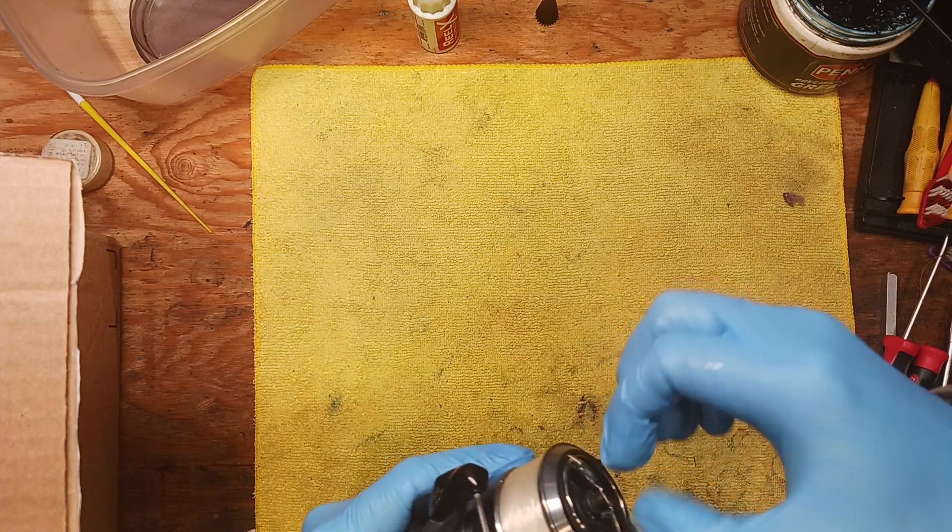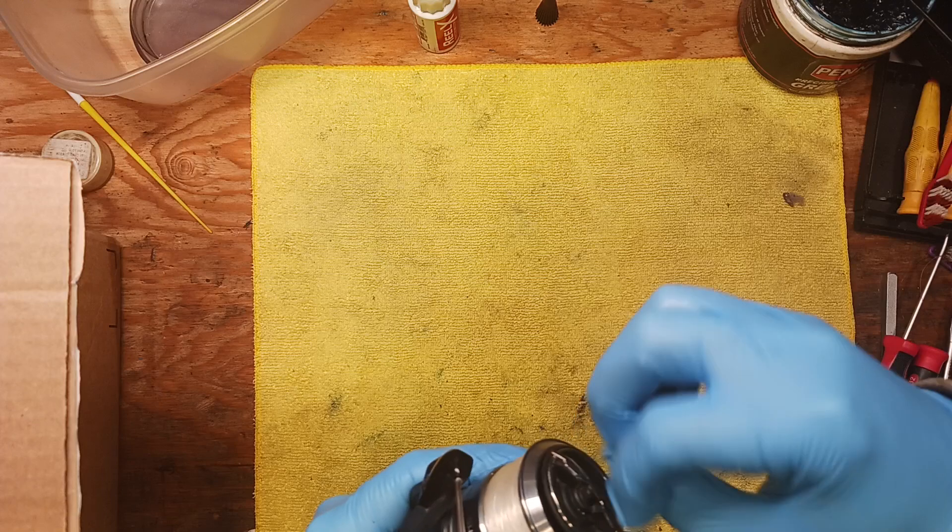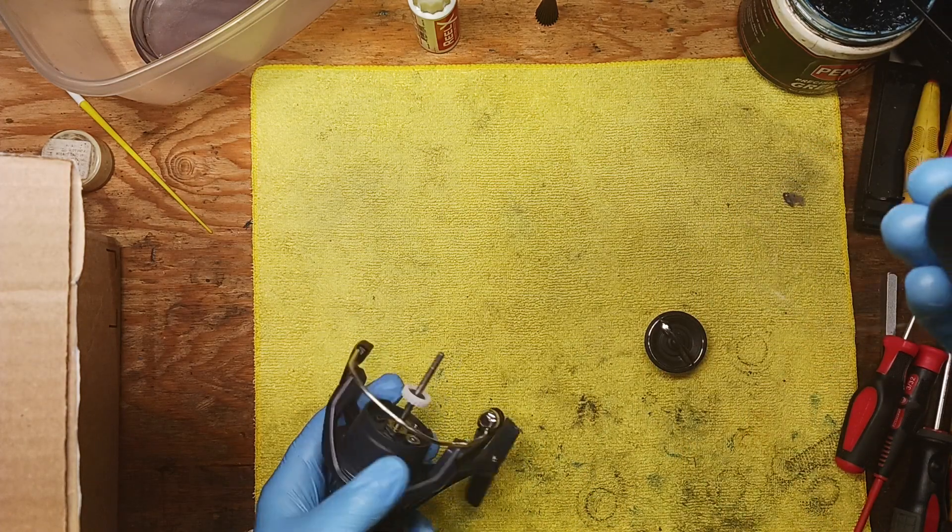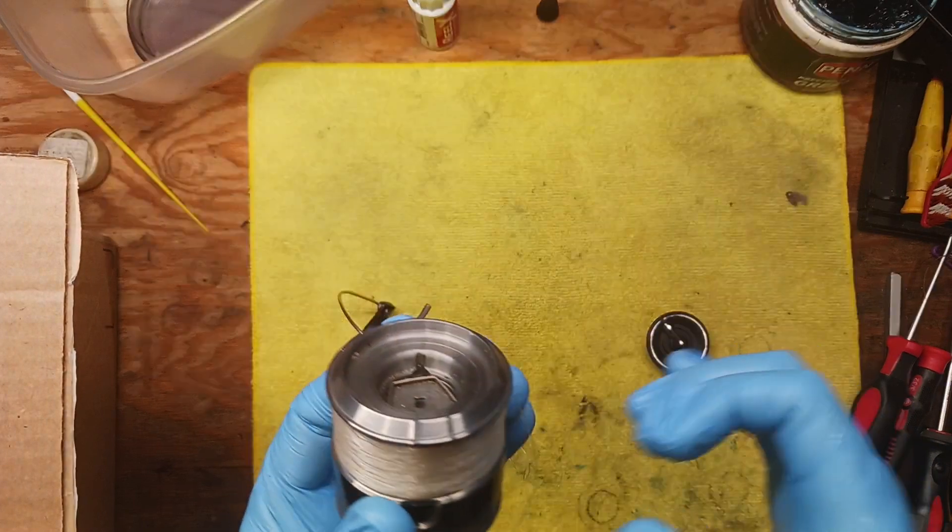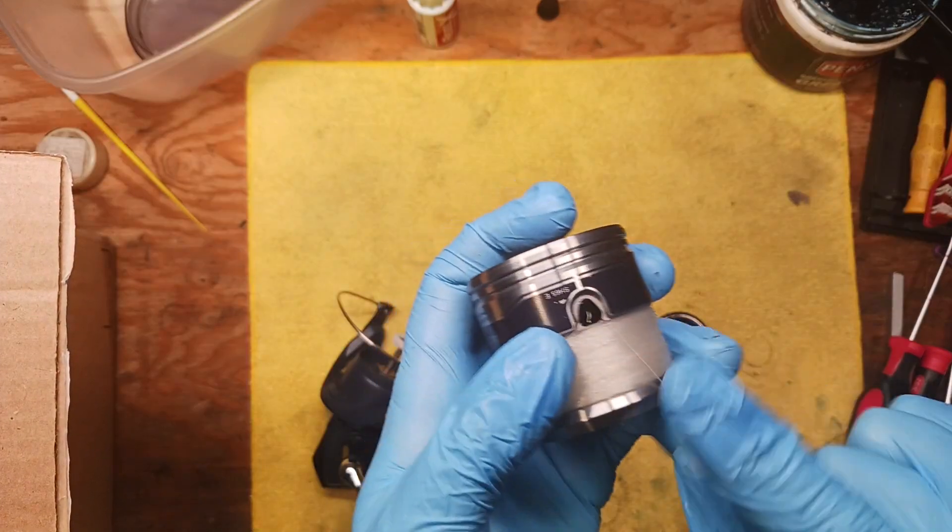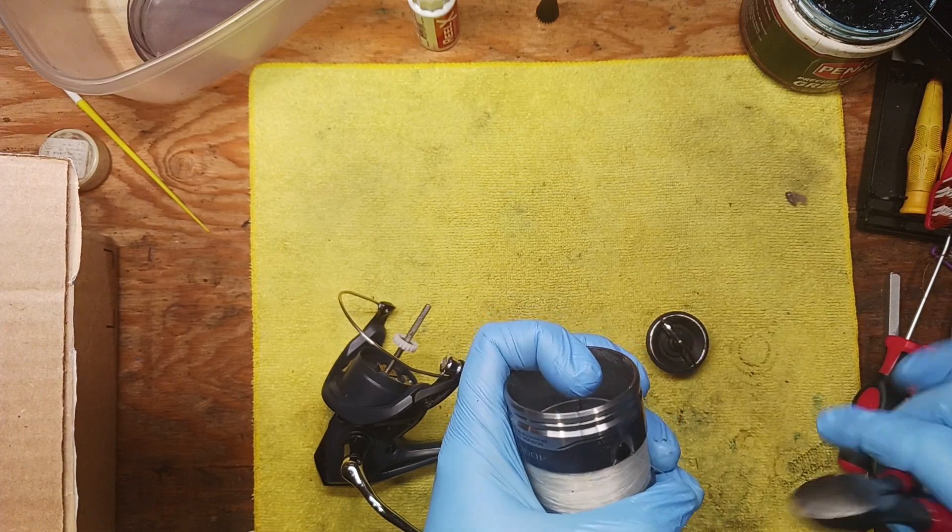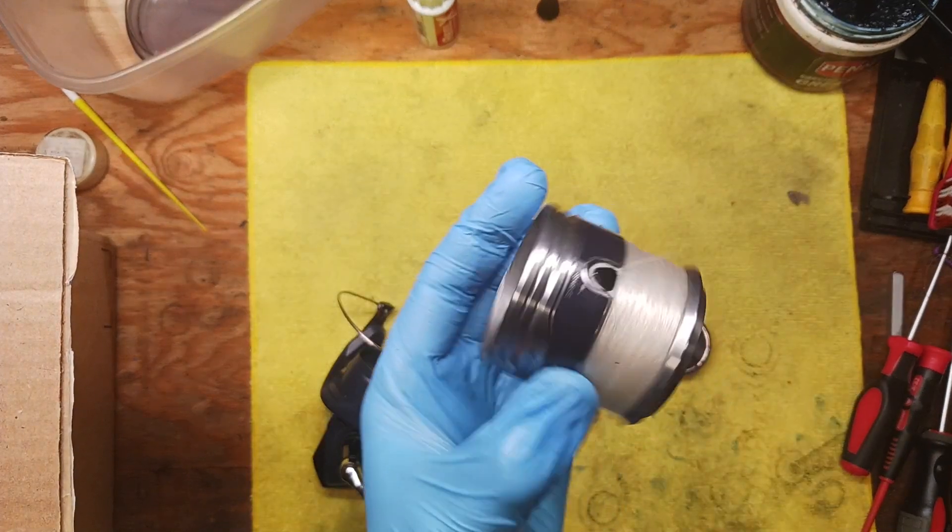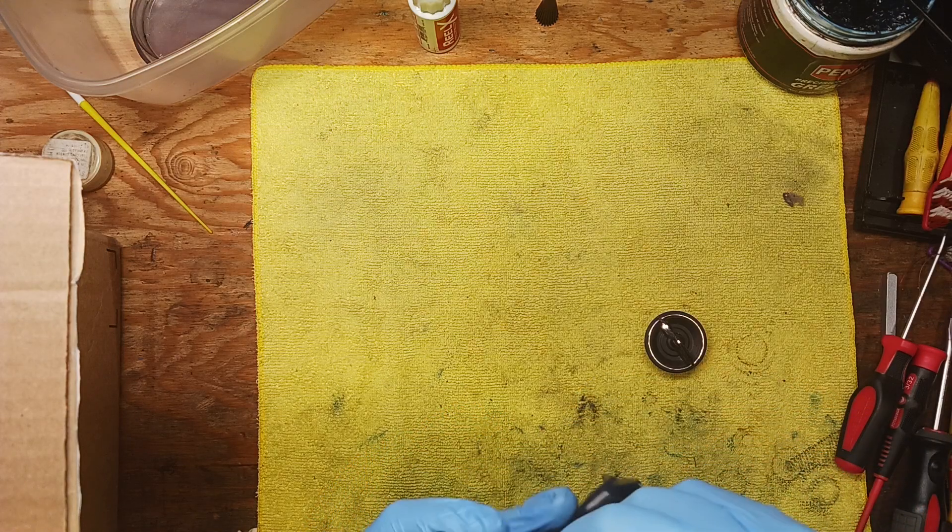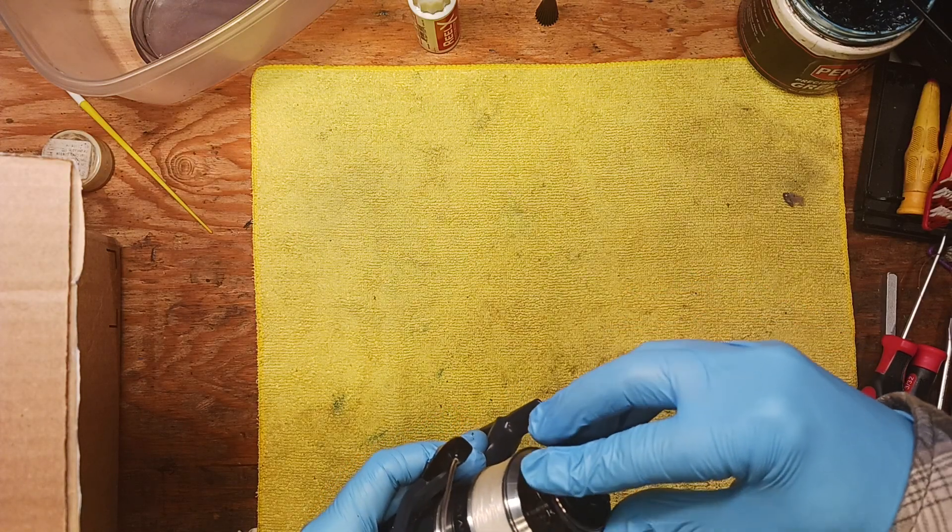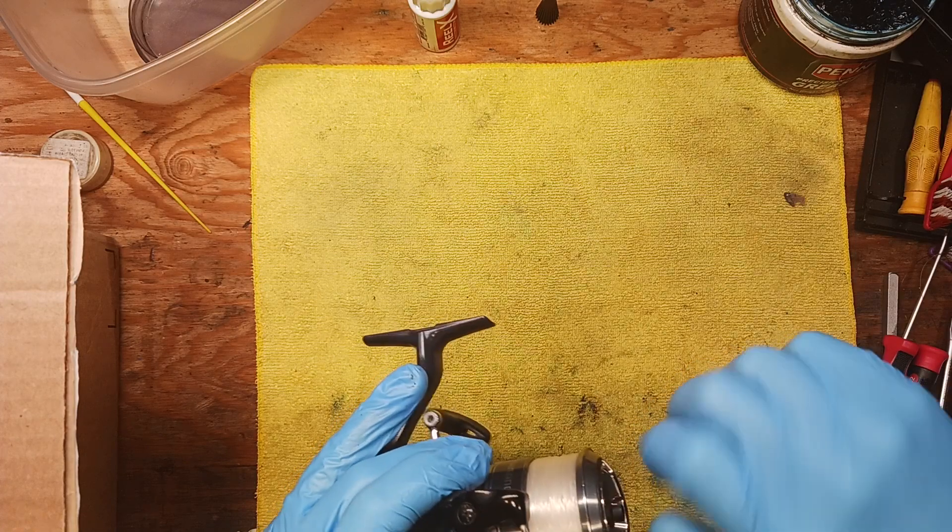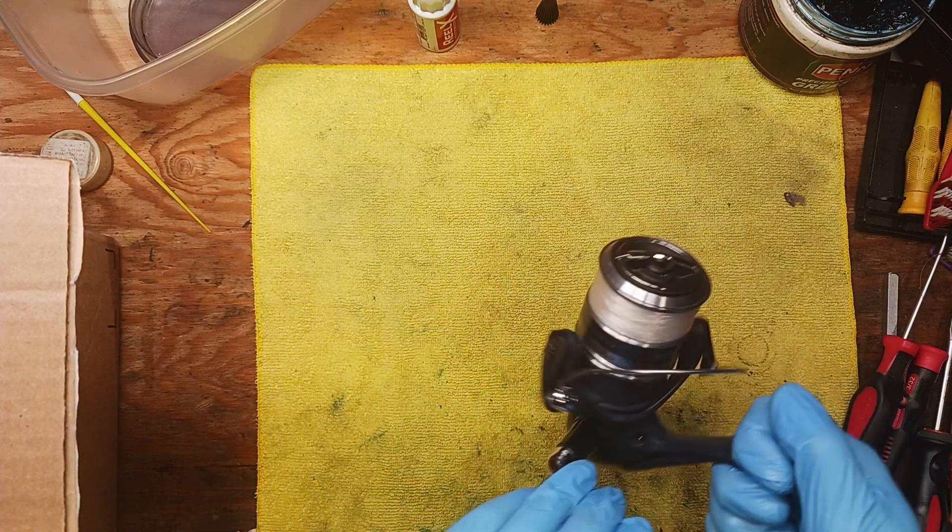Let's see if we can take off this drag stack. Looks like the drag stack's in okay shape. The line gets wrapped up under the rotor, gets caught up under there. This is one of those reels that has this tab where you can pull the line over to prevent that from happening. Sometimes it falls out, but yeah it's a nice reel, not in bad shape. It's a little dirty, there's a little bit of sand in here. We'll clean that up, make sure the bail's firing okay.